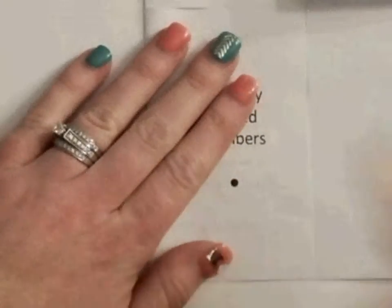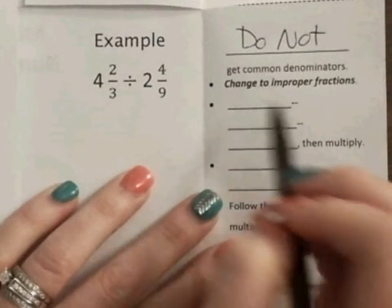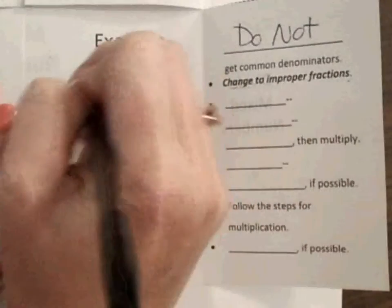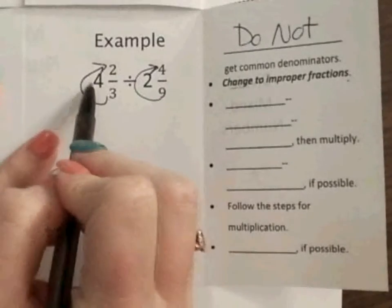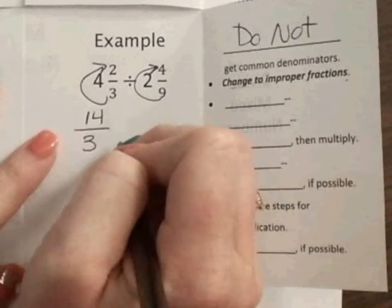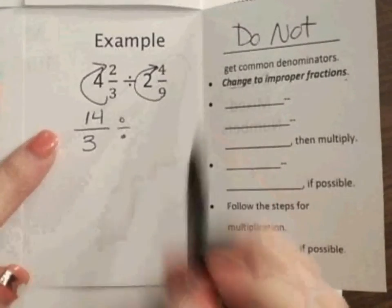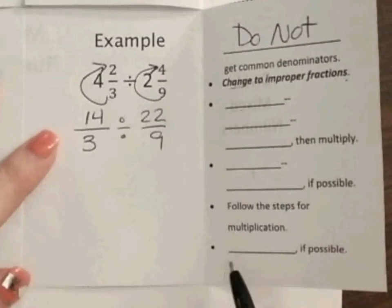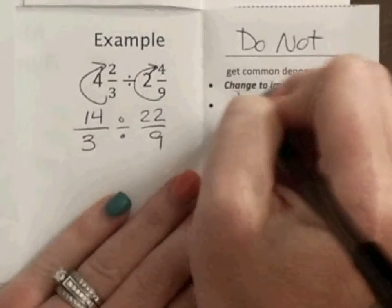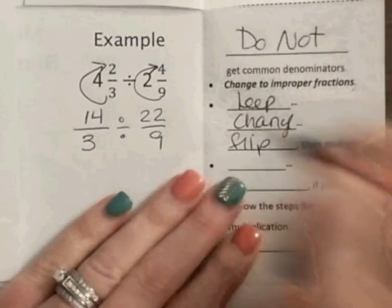So, if we go over here to dividing. Again, go back to your always, you do not need common denominator. So, we're going to change to improper fractions first by doing around the world. So, 3 times 4 is 12, plus 2 is 14 thirds, divided by 9 times 2 is 18, plus 4 is 22 ninths. So, now, you have to keep, change, and flip, okay, before we can actually multiply.